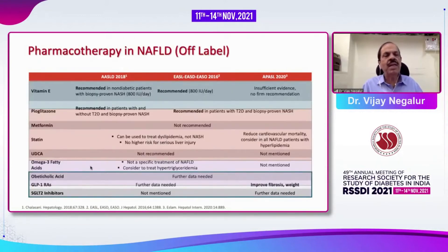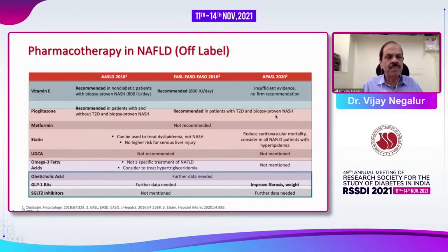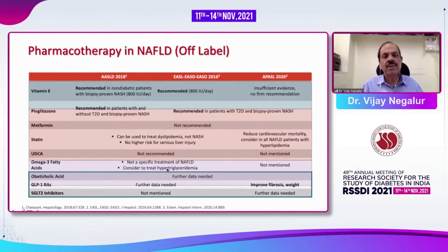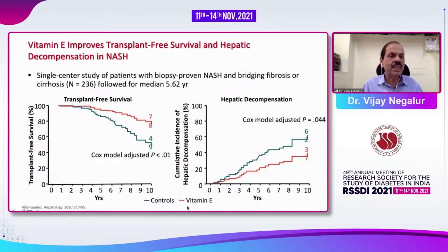For drug therapy: vitamin E is recommended for non-diabetic hepatitis as per AASLD 2018 guidelines; Asia Pacific guidelines say there is insufficient evidence for vitamin E. Pioglitazone is recommended only in biopsy-proven NASH type 2 diabetes patients. Metformin is not recommended by any guidelines. Statins can be used in patients with dyslipidemia to reduce cardiovascular mortality. Omega-3 fatty acids are not mentioned. Obeticholic acid has some data and is available in India. GLP-1 receptor agonists need further data but do improve fibrosis per APCA 2020 guidelines. SGLT2 inhibitors also require further data.